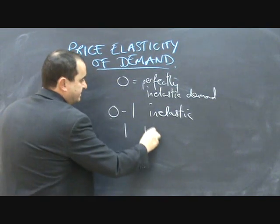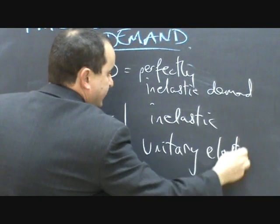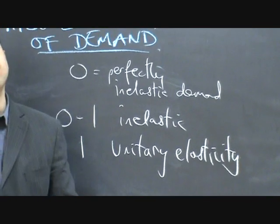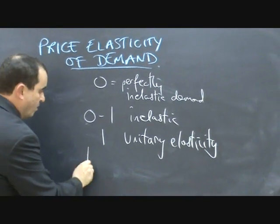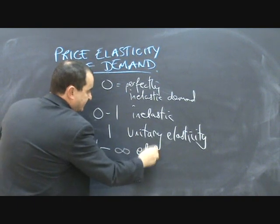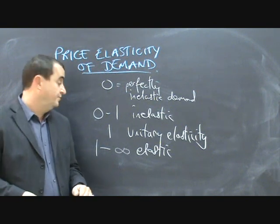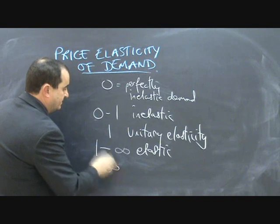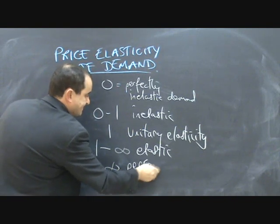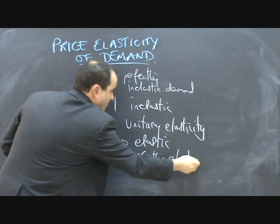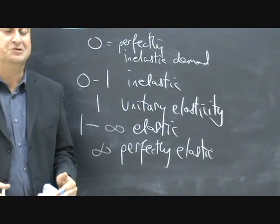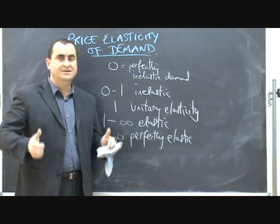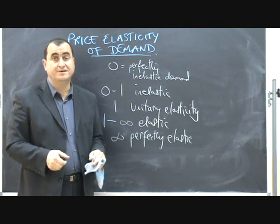If it's exactly one, we say demand has unitary elasticity — demand is changing in exactly the same proportion as the price changed; a 5% change in price leads to a 5% change in quantity demanded. From one right through to infinity is elastic demand — demand reacts strongly to the price change, by a bigger proportion than the price has changed. The most extreme case is an infinite PED reading — perfectly elastic demand — where there is the ultimate in responsiveness. If you've studied perfect competition, you'll know that in a perfectly competitive goods market, even the smallest change in price leads to a complete collapse of demand. That's an example of perfectly elastic demand.